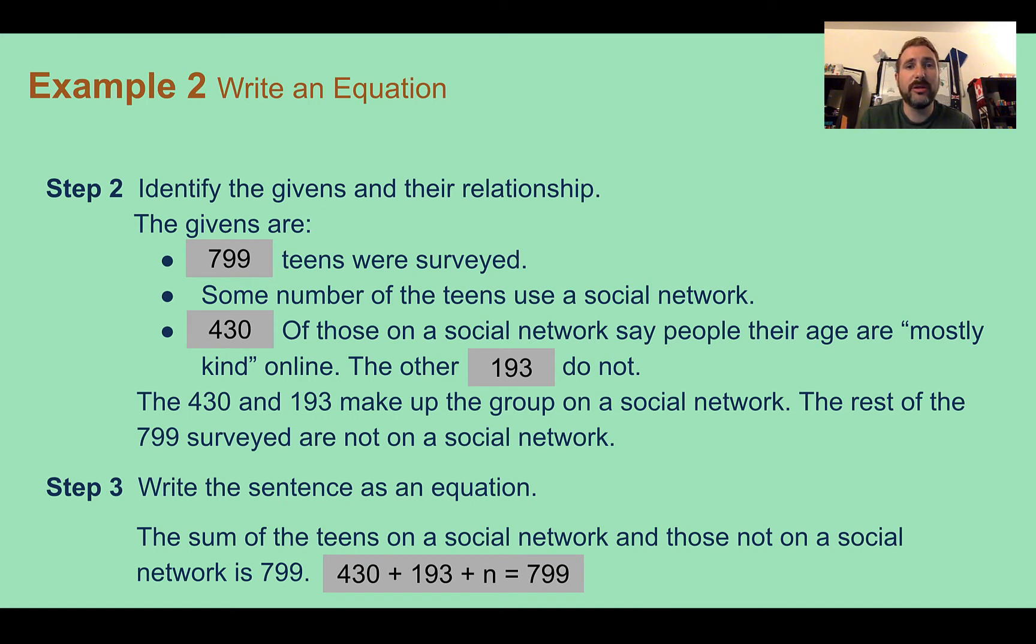The 193 people who said people are not kind, plus the n number who are not on social networks, and our total would be 799 people. That would be our equation. And we could now go through and solve to figure out n, how many people are not. But here we're just writing the equation.